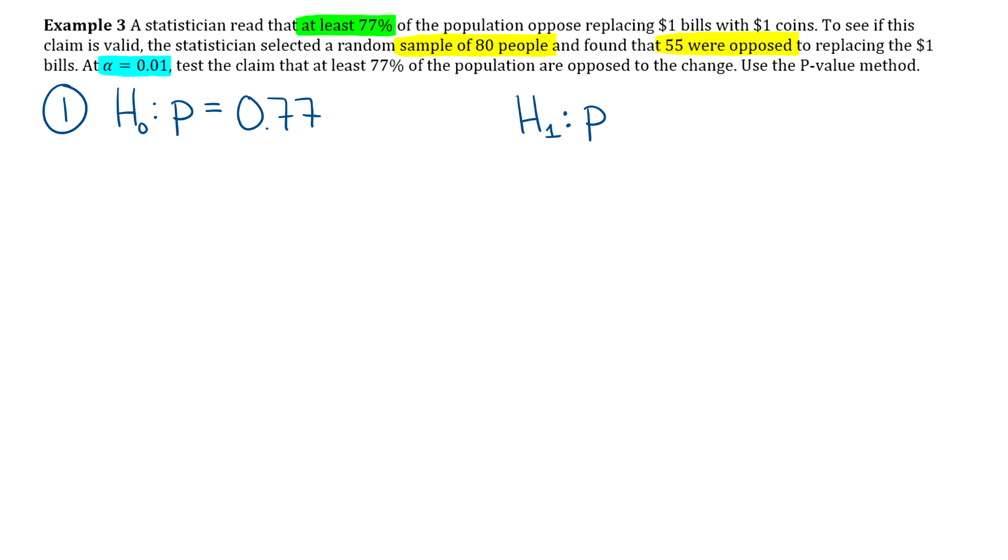And then remember, at least typically in math means greater than or equal to, but that's not one of my options that I'm allowed to use. So this was that case I talked about back in 8.1 where you're going to flip the sign, take away the equal to part. So it's just going to be that p is less than 0.77. And then your claim is going to be the null, because that shares the equal part. So hopefully that made sense to you.